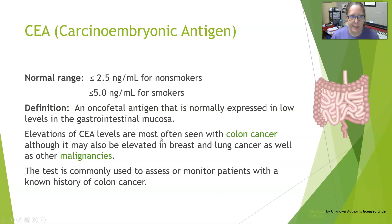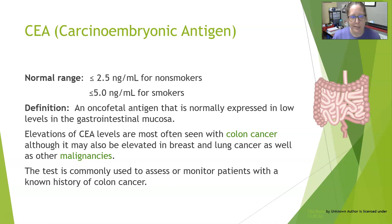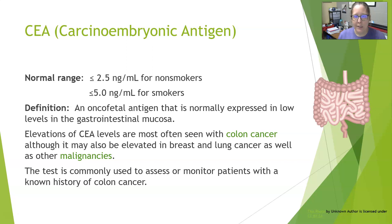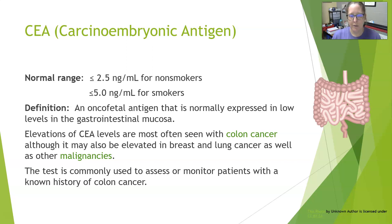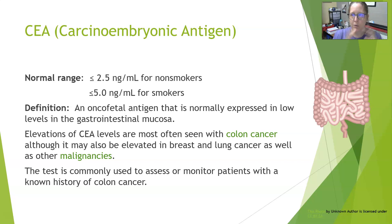Lastly, we have CEA — that's carcinoembryonic antigen. The normal range is less than 2.5 nanograms per mL for non-smokers, and less than 5 nanograms per mL for smokers. CEA is an oncofetal antigen that is normally expressed at low levels in the GI mucosa, meaning CEA levels are normally high in the fetus. The other instance where we see elevated levels is in oncology cancers — that's why it's called oncofetal.